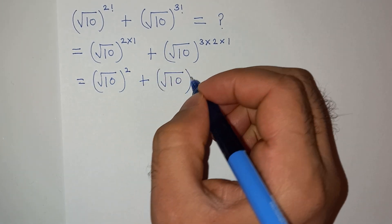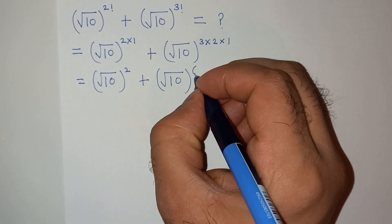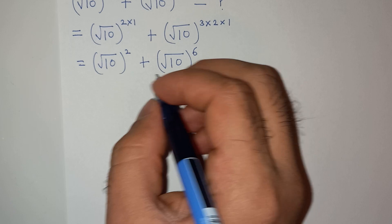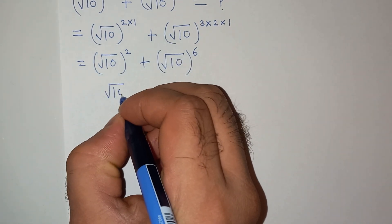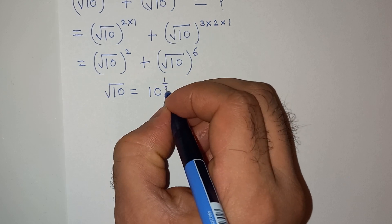Further on simplifying this, we have square root of 10 to the power 2, plus square root of 10 to the power 6. Now square root of 10 can be written as 10 to the power 1 by 2.